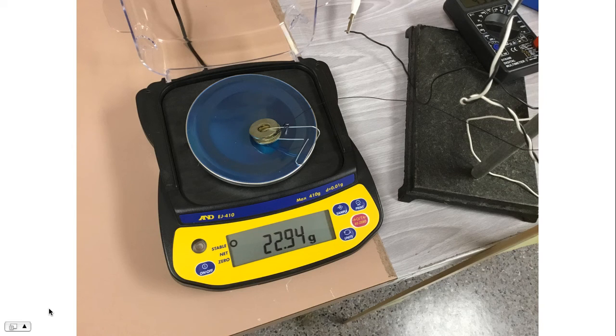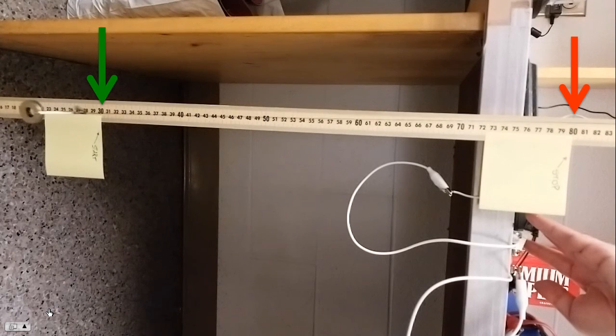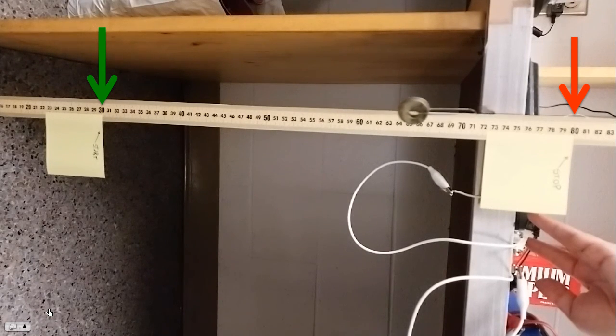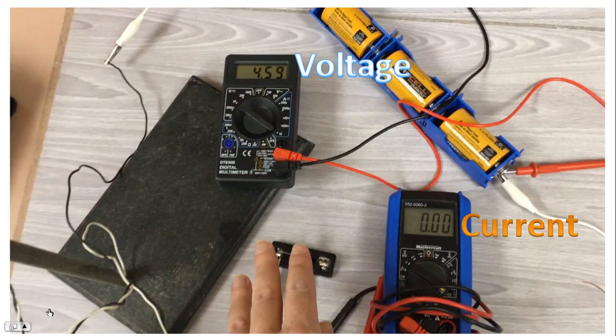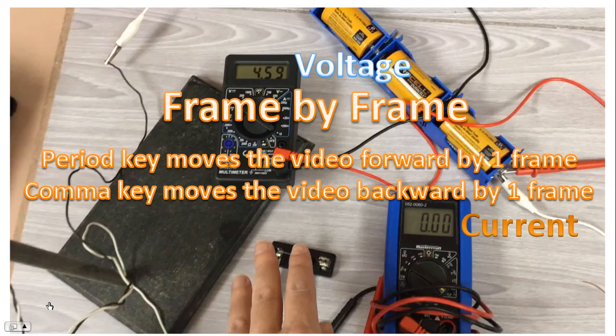Here's our next data point, the 22.94 gram mass. Here comes the video. Get ready with your stopwatch. Remember to start at the green arrow. Please complete four trials. Here comes the voltage and the current. Remember, this is in real time. Remember to play it back frame by frame. The period key moves the video forward by one frame and the comma key moves the video backward by one frame.